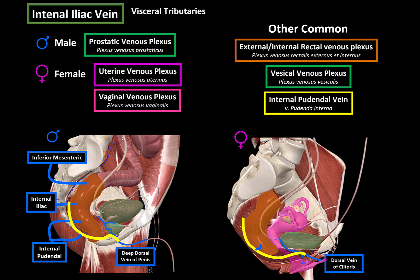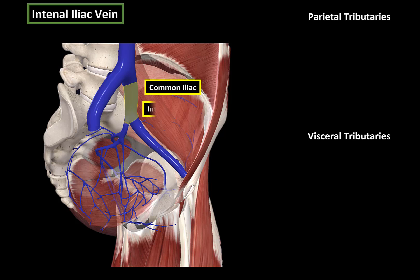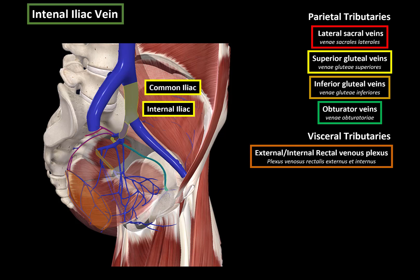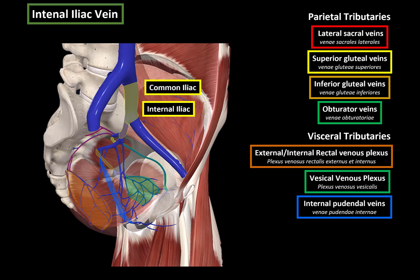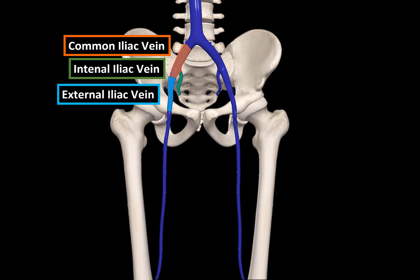That was all for the tributary veins of the internal iliac. To recap: the parietal tributaries include the lateral sacral vein, the superior gluteal vein, the inferior gluteal vein, and the obturator vein. The visceral tributaries include the rectal venous plexus, the vesical venous plexus, and the internal pudendal vein. In females, we have the vaginal and uterine venous plexuses, and in males, the prostatic plexus, which fuses with the vesical plexus. That covers the topography and tributaries of the iliac veins.